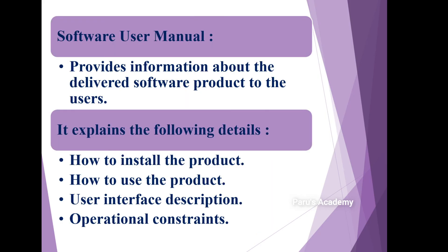The third artifact is the software user manual. Just as when we buy a TV or fridge, they provide a user manual explaining how to use that product, the same way for software we should develop a software user manual. It provides information about the delivered software product to the user — instructions on how to use the software product after delivering it to the customer.